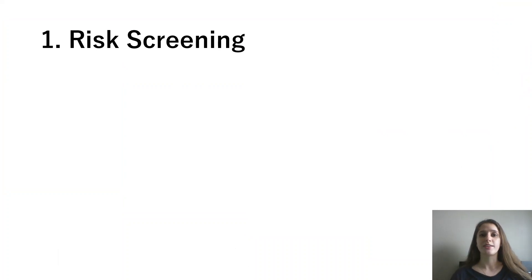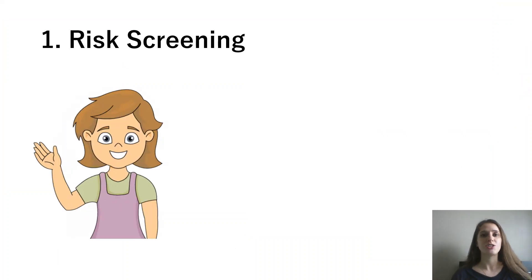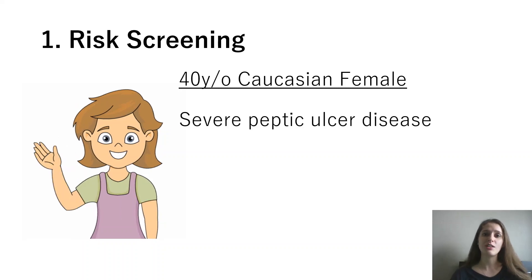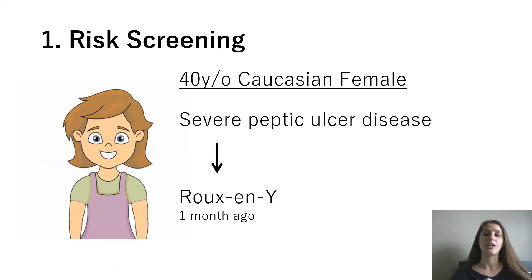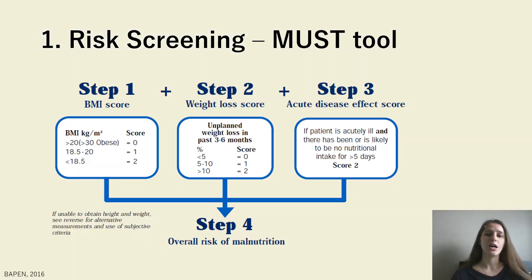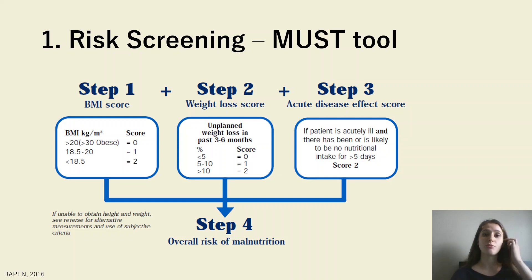Starting with the risk screening — you see your patient and this is what you see. It's a 40-year-old Caucasian female. She had severe peptic ulcer disease, which resulted in her getting a Roux-en-Y procedure one month ago. For the purpose of this video, I'm making use of the MUST tool to screen her, but you can use any validated screening tool that your department, your hospital, or even you as an individual uses. There are five different steps to the MUST tool.